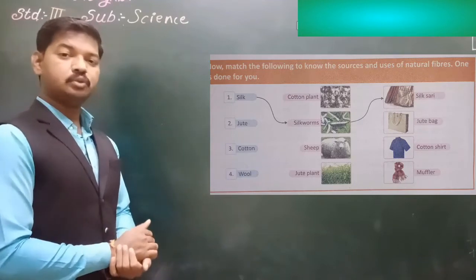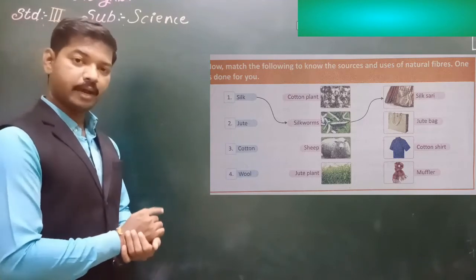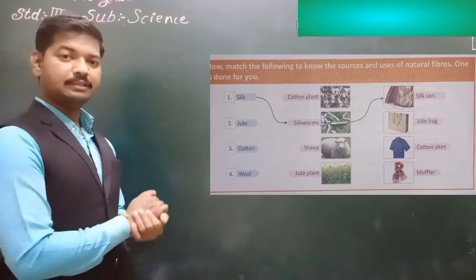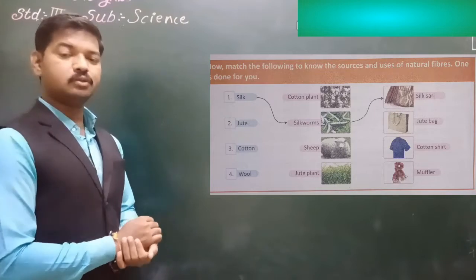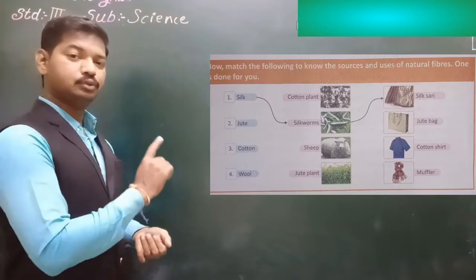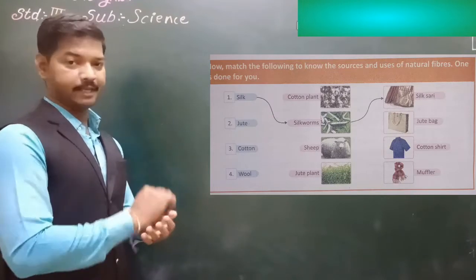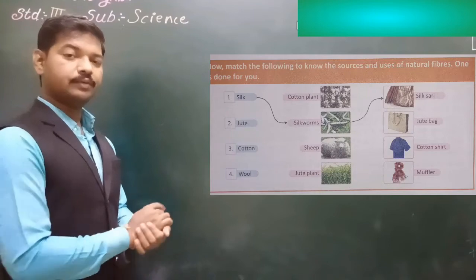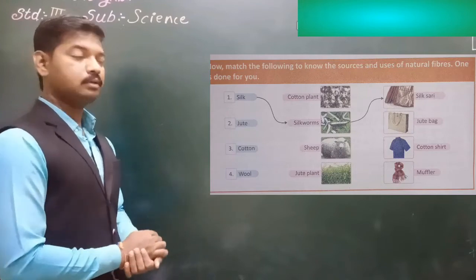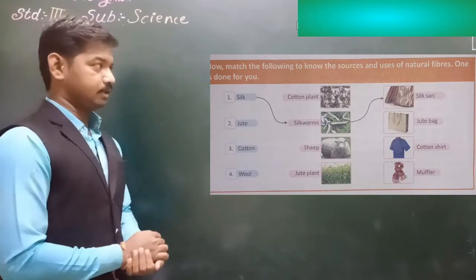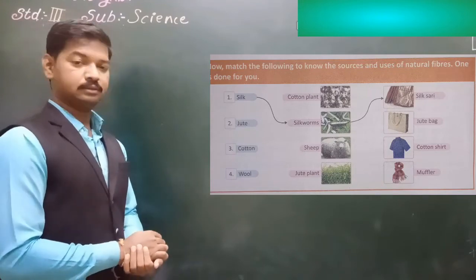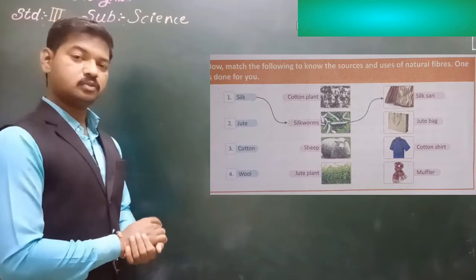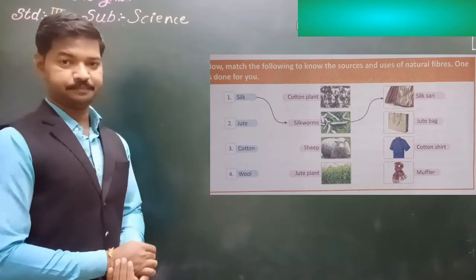Number two: jute. Jute is matched with jute plant and jute is used to make jute bags. Number three: cotton. Cotton is obtained from the cotton plant, and cotton is used to make cotton cloth.